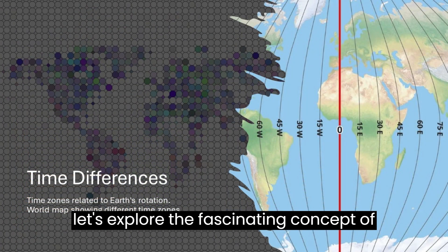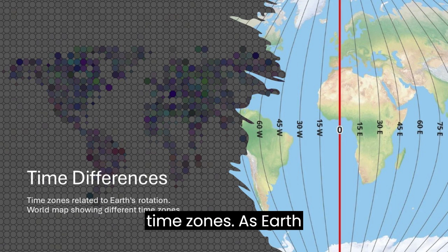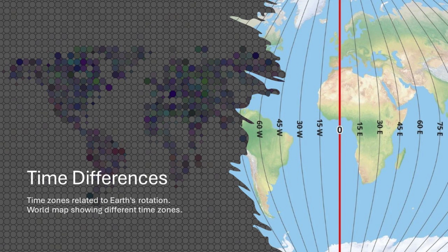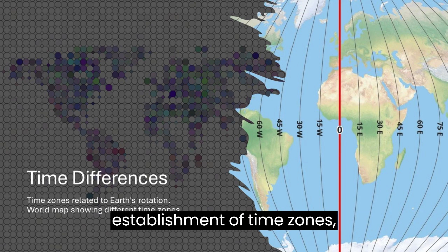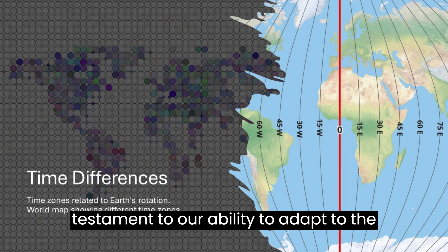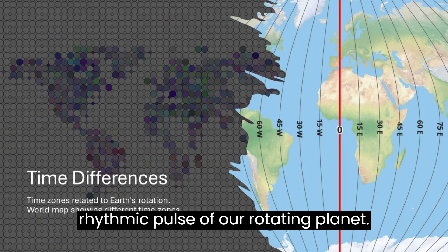Now let's explore the fascinating concept of time zones. As Earth spins, different regions experience daylight at various times. This natural progression has led to the establishment of time zones, creating a global tapestry of interconnected clocks. It's a testament to our ability to adapt to the rhythmic pulse of our rotating planet.